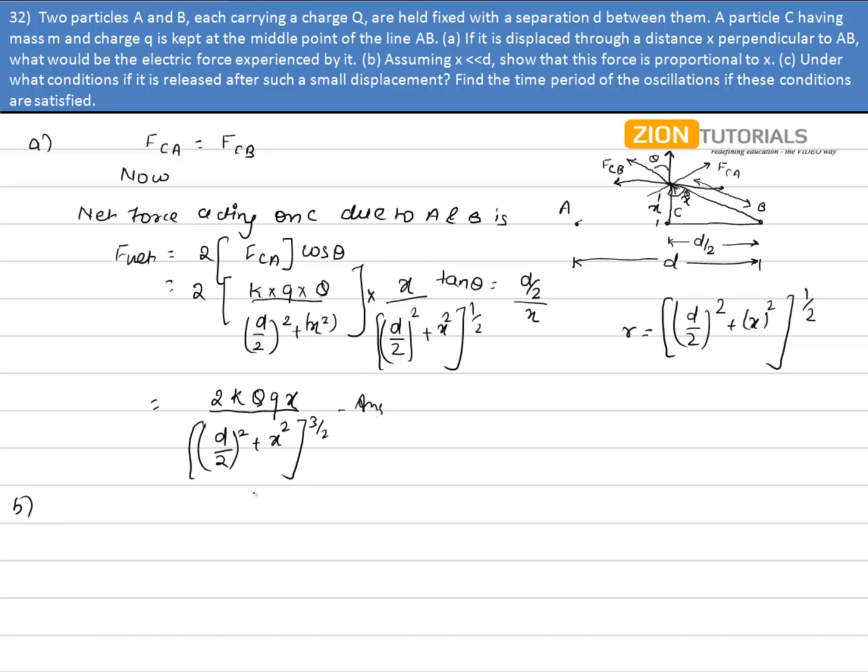Now if we assume that X is very very less than D, then by 2, D by 2, so X can be neglected.